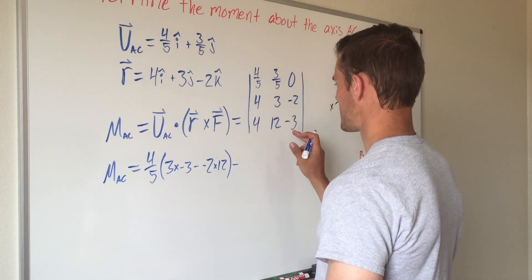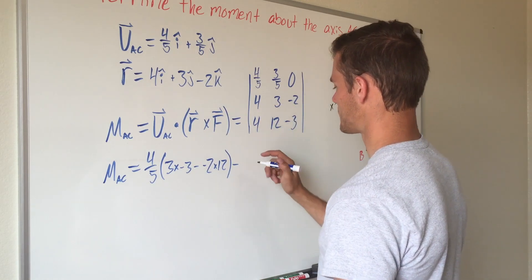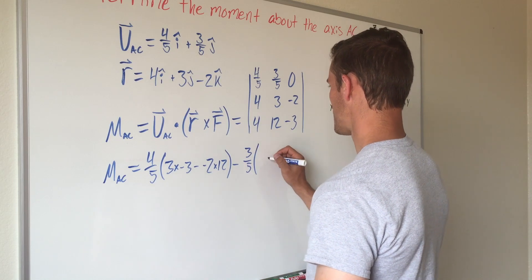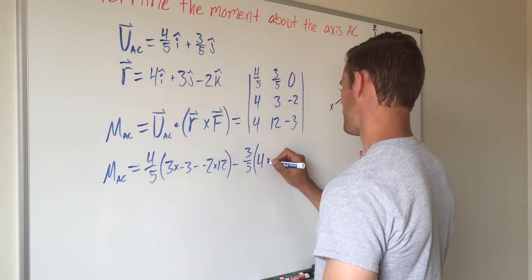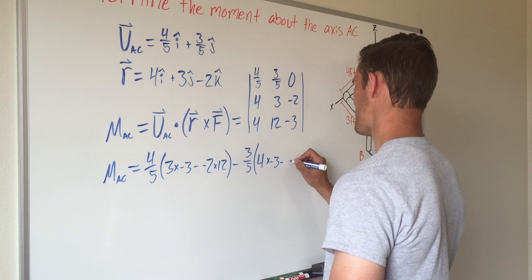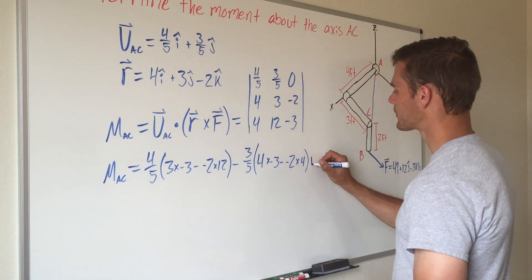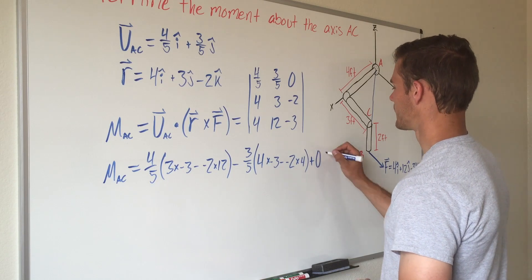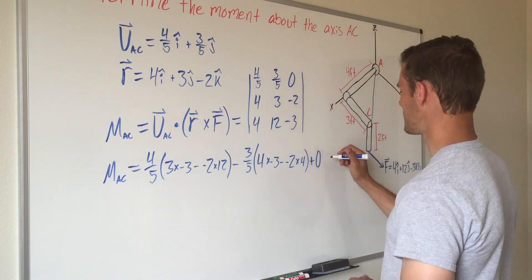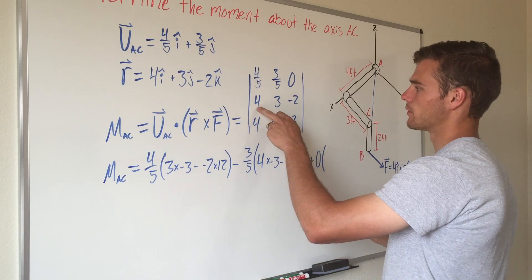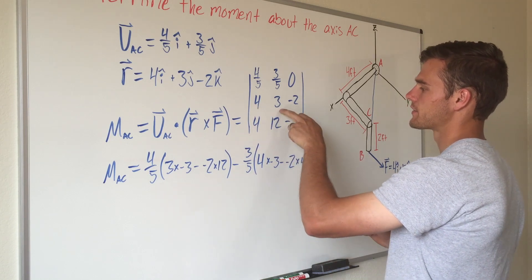Minus, we're going to cross out this row and this column, it will be 4 times negative 3 minus negative 2 times 4. And then we don't really have to write out this last component because it's all multiplied by 0, but I will anyway just for your sake: 4 times 12 minus 3 times 4.